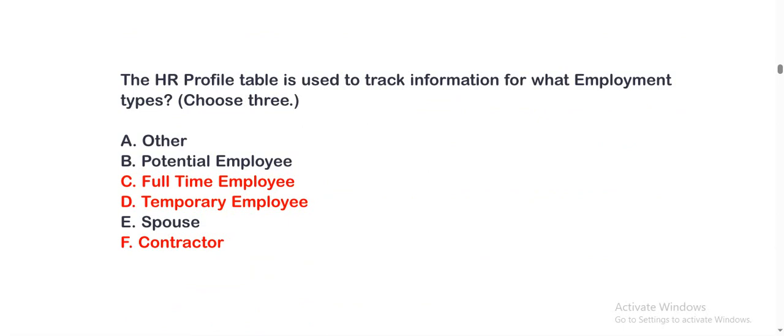My next question is: The HR profile table is used to track information for what employment types? Choose three options. The options are: Option A, Other; Option B, Potential Employee; Option C, Full Time Employee; Option D, Temporary Employee; Option E, Spouse; Option F, Contractor. The correct options are Option C, D, and F.